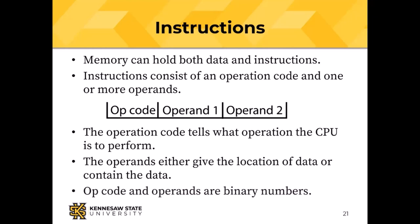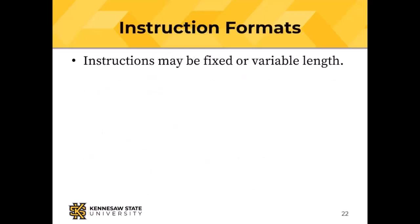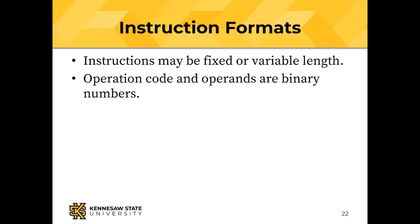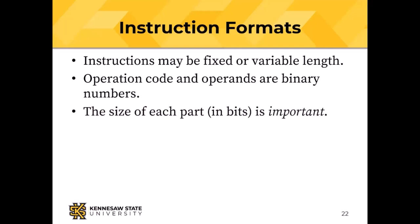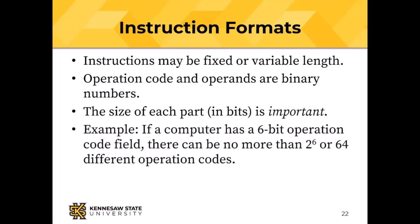Everything inside a computer is a binary number. Instructions can be of either fixed length or variable length — the Intel x86 architecture has variable length instructions. The operation code and the operands are binary numbers. If you have a six-bit operation code, there are 64 different combinations of six bits, so you can only have 64 distinct operations.